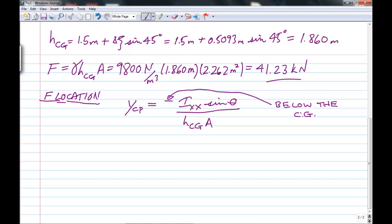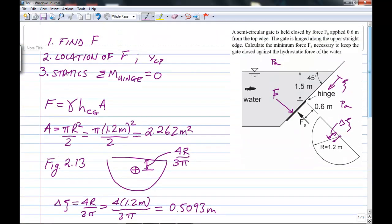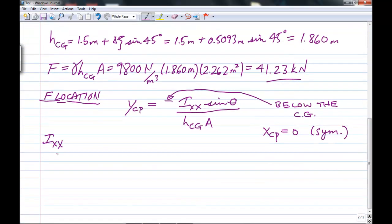And of course, in this case, the gate is symmetrical about the vertical axis. So x center of pressure equals zero. So, and we'll just make a little note of the fact that it's symmetrical. And I'll scroll up here, and what that means. So that means that the force acts along this line, this center line of the gate, because it's symmetrical about the vertical axis.